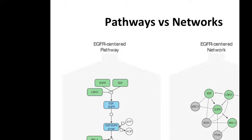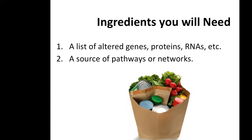Networks can bring in data from yeast two-hybrid screens, proteomics screens, microarray-based co-expression, literature mining for co-mentioned genes, genetic suppressor enhancer screens — you name it, they can all be brought into a network. So they tell you about more genes, but there's less information about how they're actually interacting with each other.